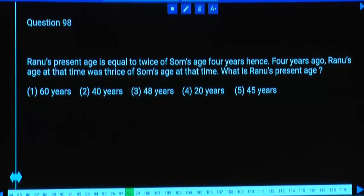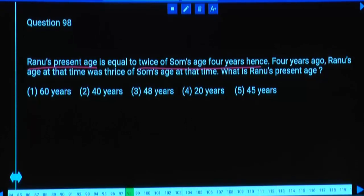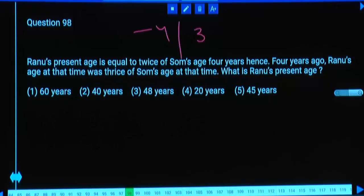Ramu's present age equals twice Somo's age 4 years hence. 4 years ago, Ramu's age was thrice Somo's age at that time. What is Ramu's present age? Since Ramu's present age equals 2 times something, it should be even. But there are 4 even options. 4 years ago it was 3 parts, so Ramu's age back then must be a 3 multiple.